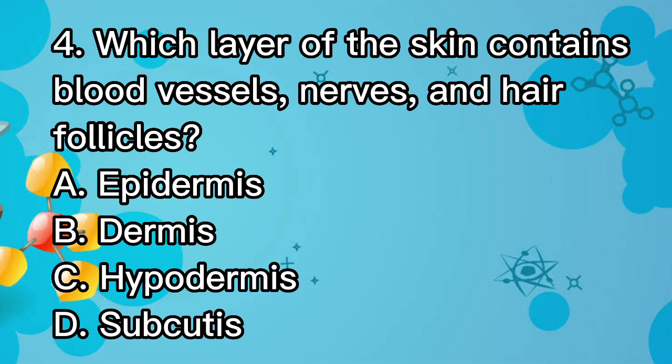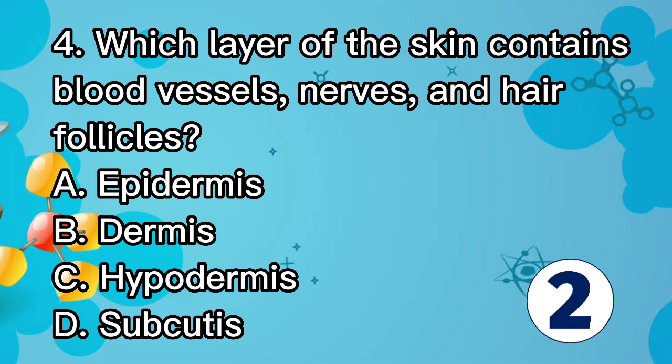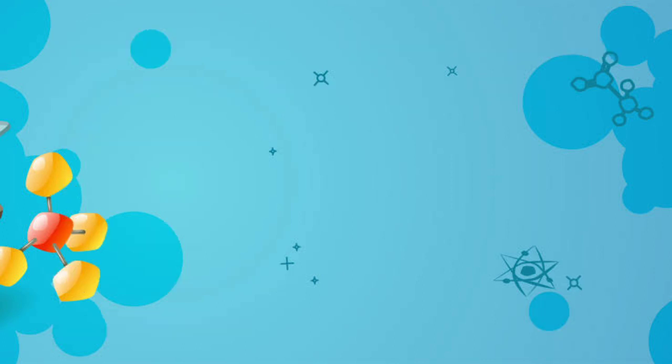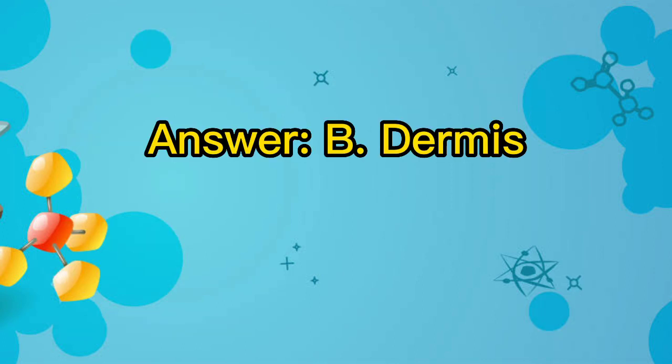Question 4. Which layer of the skin contains blood vessels, nerves, and hair follicles? A. Epidermis. B. Dermis. C. Hypodermis. D. Subcutis. Answer: B. Dermis.